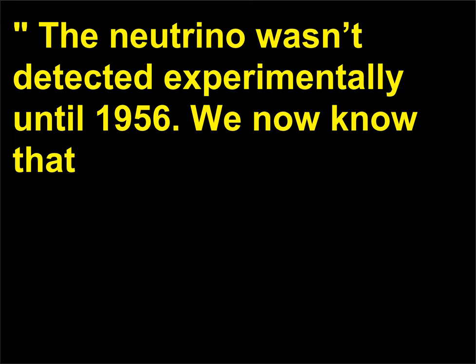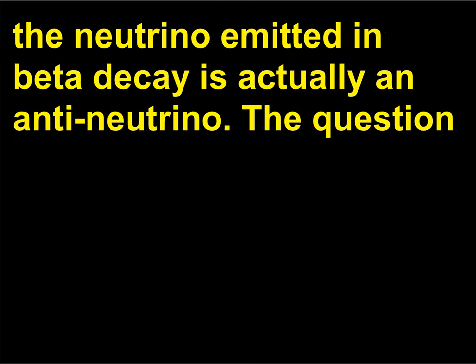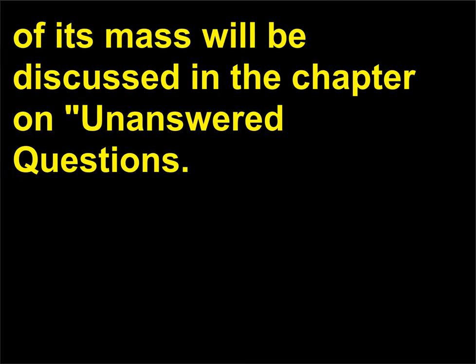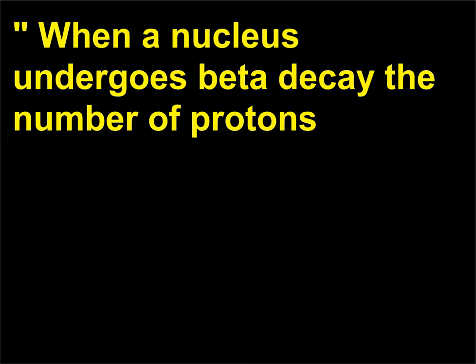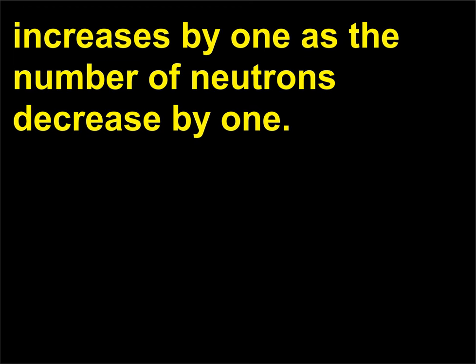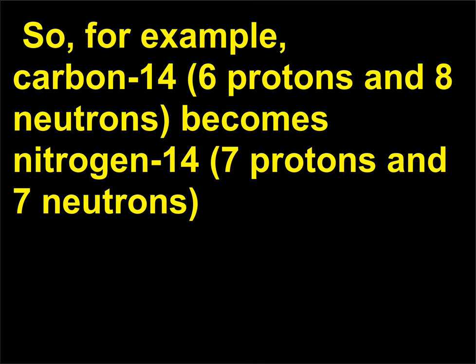The neutrino wasn't detected experimentally until 1956. We now know that the neutrino emitted in beta decay is actually an anti-neutrino. When a nucleus undergoes beta decay, the number of protons increases by 1 as the number of neutrons decreases by 1. So, for example, carbon-14 — 6 protons and 8 neutrons — becomes nitrogen-14 — 7 protons and 7 neutrons — with the emission of a beta electron and an anti-neutrino.